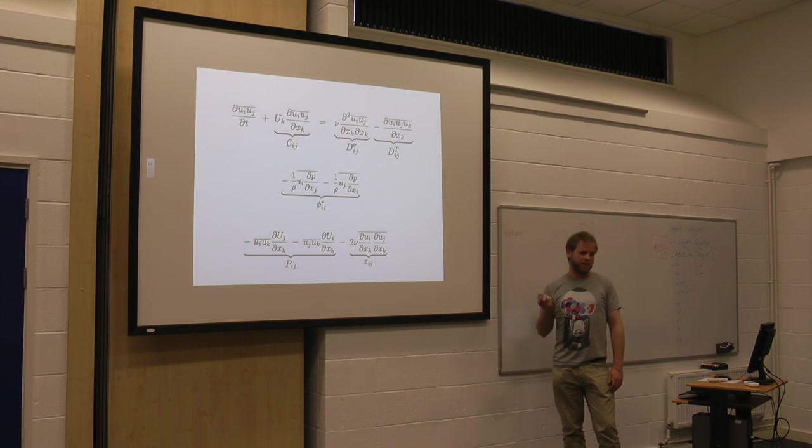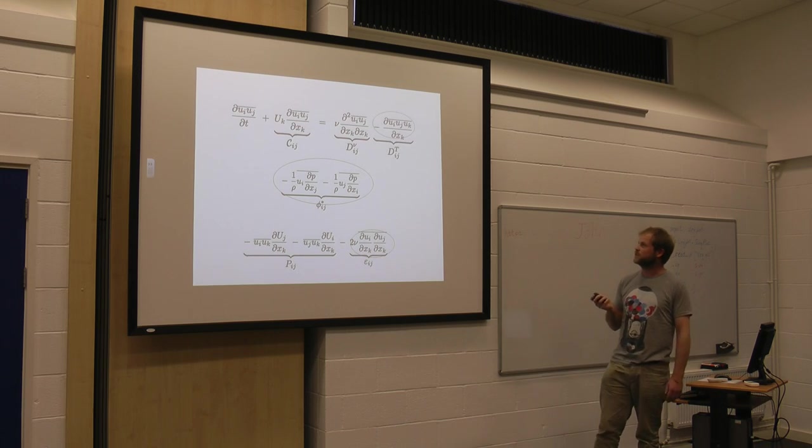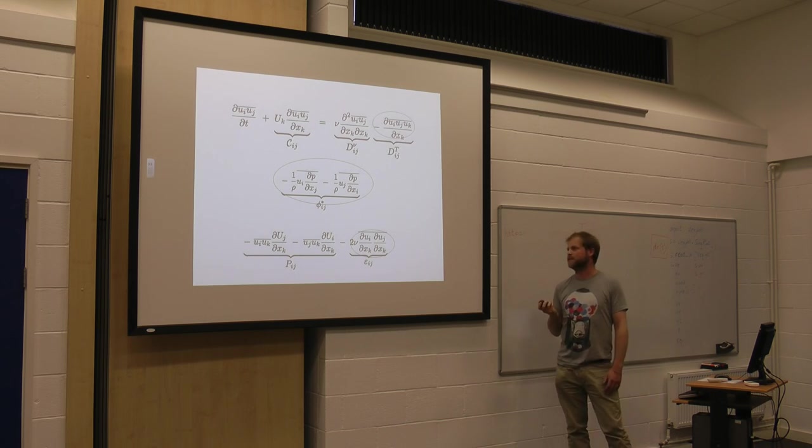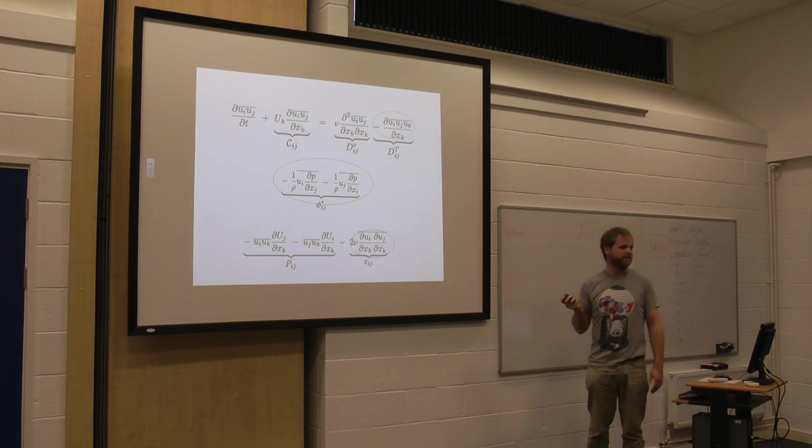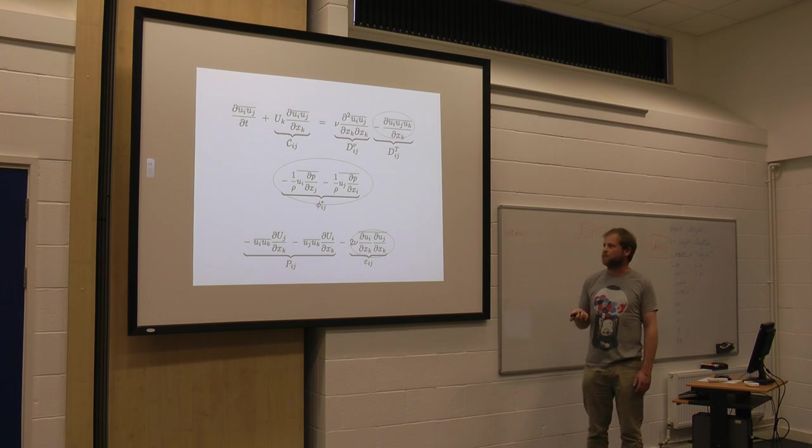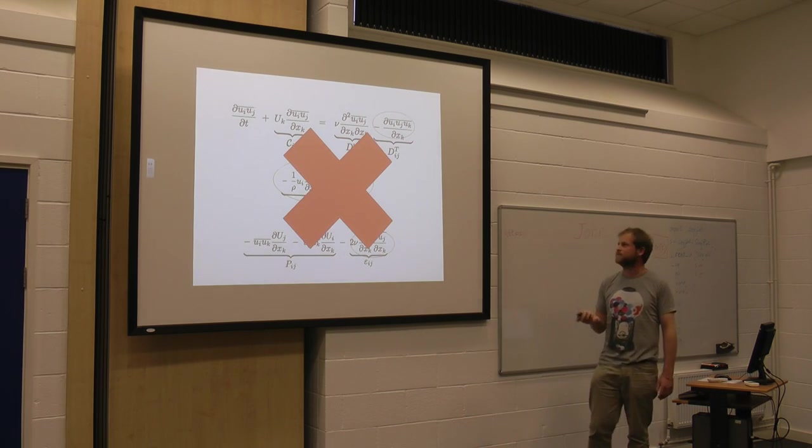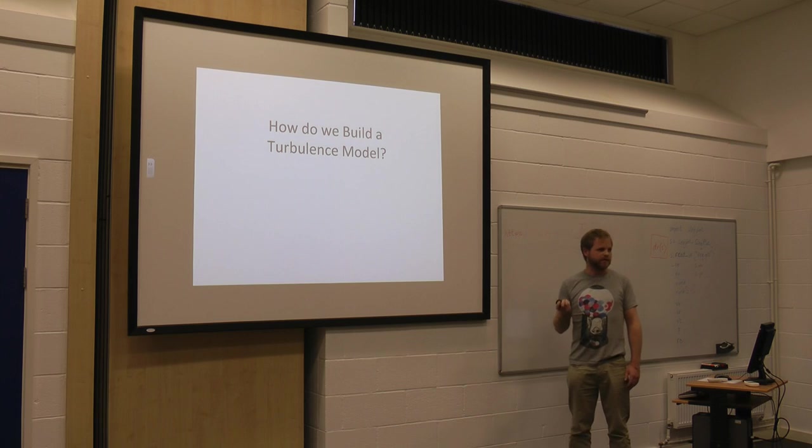And apart from being a horrendous equation, we also notice that these terms here that are circled in red are actually things that we don't know. So we've come up with an equation for something, and then we've realized that in that equation are more unknowns that we don't know. So we forget about that. It's too hard.